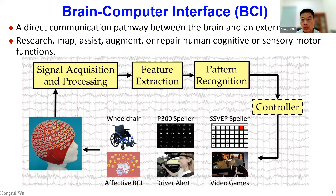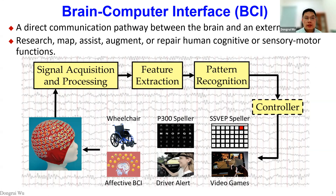A brain-computer interface is a direct communication pathway between the brain and an external device. It can be used to research, map, assist, augment, or repair tumor cognitive or sensory-motor functions. This diagram shows the closed-loop flowchart of a BCI system.